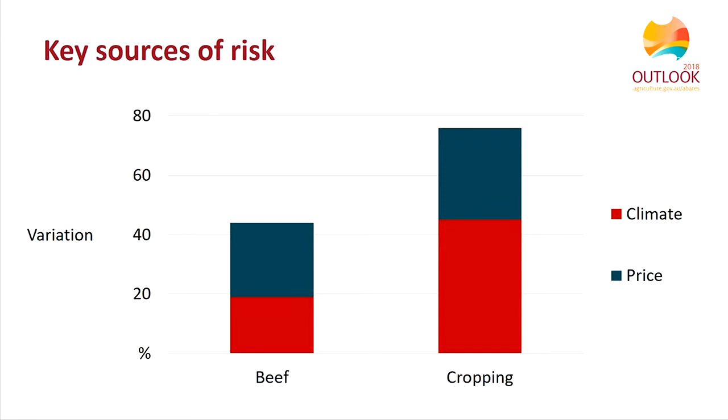The main reason beef farms are more sensitive to price changes is that they don't have a great capacity to change the commodities they're producing when prices change. Whereas in the cropping industry you can switch between different grains, other crops, and quite often into livestock. Also, this model only looks at annual profits, which probably understates the climate effect that beef farmers face, because it doesn't capture changes in livestock inventories that occur following a drought.